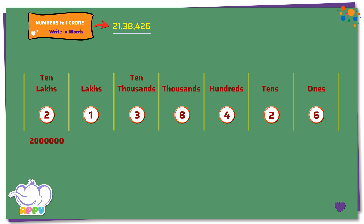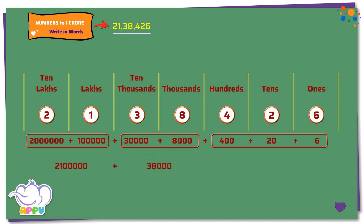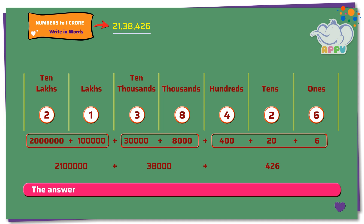2138426 equals 20 lakhs plus 1 lakh plus 30,000 plus 8,000 plus 400 plus 20 plus 6. To represent this in words, we always group the first 2, next 2, and the last 3: 21 lakhs plus 38,000 plus 426. So the answer is 21 lakh 38,426.